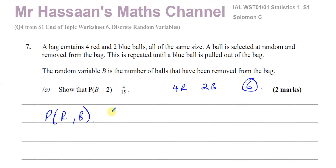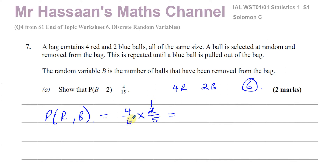Because you stop when a blue comes out, if B equals 2, the second ball must be blue and the first must be red. The probability of picking a red first is 4 over 6. Then there's one fewer ball left, but both blues remain, so the second pick is 2 over 5. That gives 4/6 × 2/5, which simplifies to 4 over 15 — exactly what we had to show.